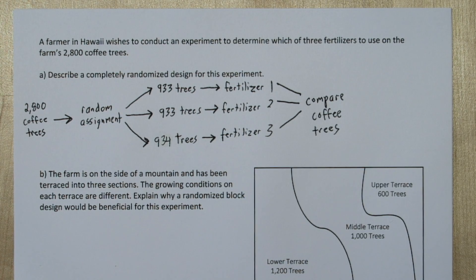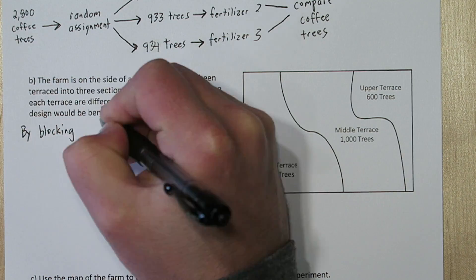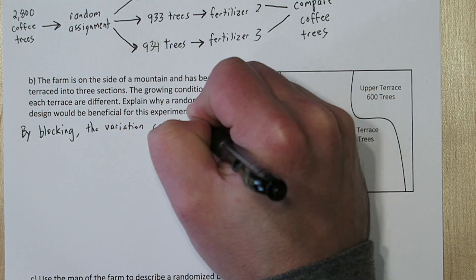Now the problem we're going to have is the different growing conditions could potentially confound with the different fertilizers. It might be difficult to detect what the fertilizers are doing if there's so much variation being caused by these different growing conditions.